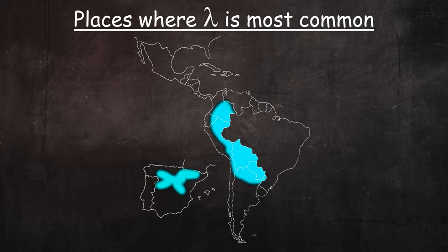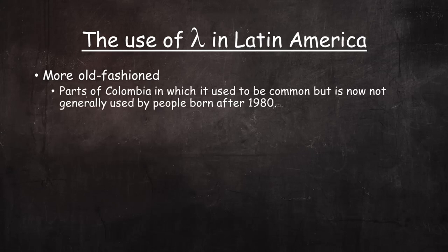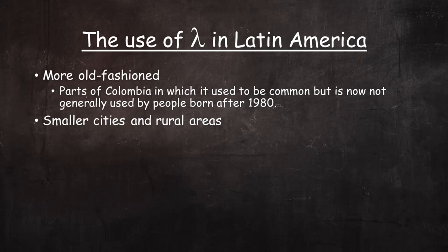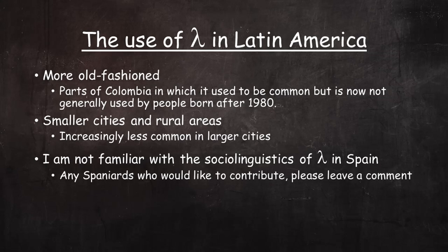On a personal note, elie is fairly common in parts of South America where I have lived, and I have close friends who are natives of those regions who use it. I don't have experience with sociolinguistic attitudes toward elie in Spain, but in Latin America it's generally viewed as a more old-fashioned pronunciation. There are parts of Colombia where it used to be common, but where now it's not generally used by people born after 1980. In other countries it's mainly found in smaller cities and rural areas, and is increasingly less common in larger cities. I'm unaware of the sociolinguistics of elie in Spain — any Spaniards who would like to contribute to the discussion, please leave a comment.